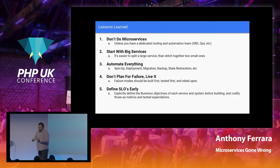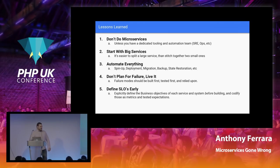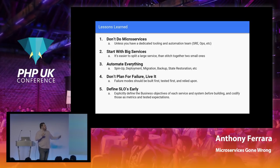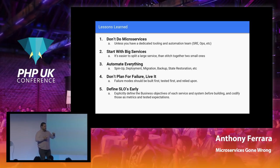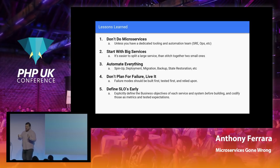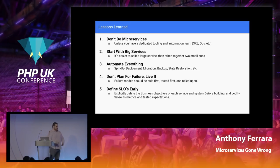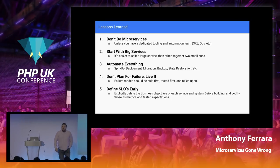My number one recommendation: do not do microservices. I'm not saying microservices is a bad pattern — there are lots of very large, successful teams who do it very well. But do not do it, period, unless you have a dedicated team for tooling and infrastructure. And I'm not just talking about production tooling — I'm talking about developer tooling. If it is not easy for your build systems to work, for you to run tests, and to do local dev in a fully automated fashion, you will have a bad time at scale with this level of complexity. Start with big services — it's easier to split a large instance than to stitch two together.